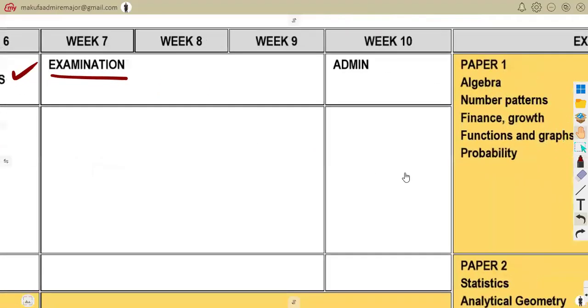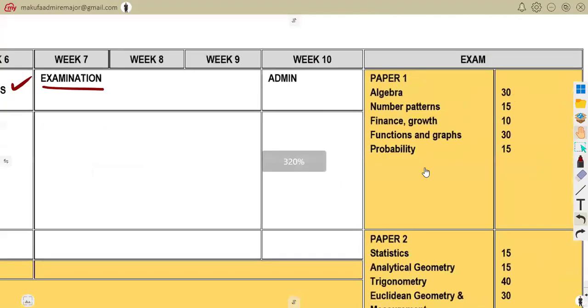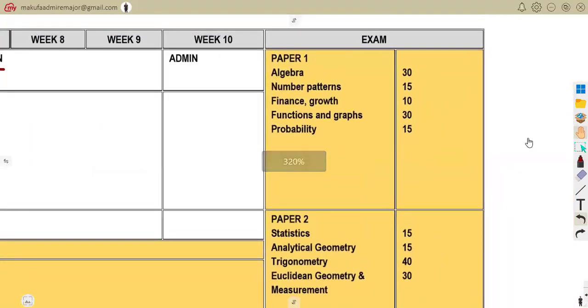That is the part of our examination, which is going to be comprising of these. Paper one, as we had before from our term one. This is going to be your algebra, 30. Number patterns, 15. Finance and growth, 10. Functions and graphs, 30. Probability, 15.